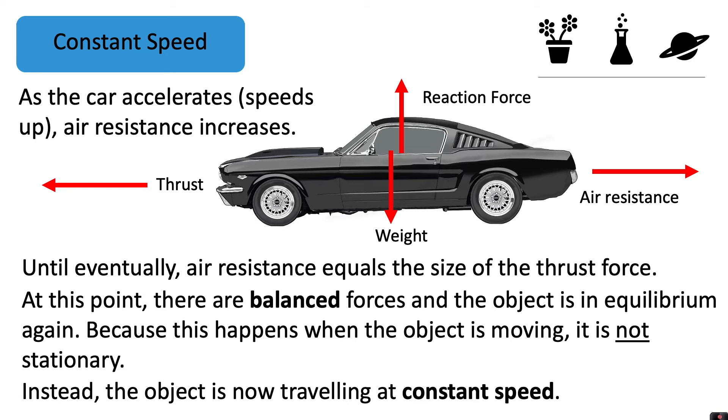So if the object is already moving and then it experiences balanced forces, it will travel at a constant speed. If the object starts off stationary and it has balanced forces, then it will remain stationary.